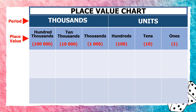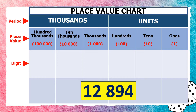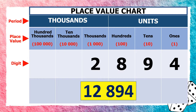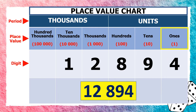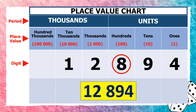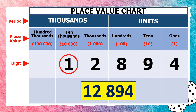Now let us place the digits of 12,894 in the place value chart, starting with the digit on the right: 4, 9, 8, 2, and 1. Looking at the chart, the place value of 4 is 1s, the place value of 9 is 10s, the place value of 8 is 100s, the place value of 2 is 1,000s, and the place value of 1 is 10,000s.